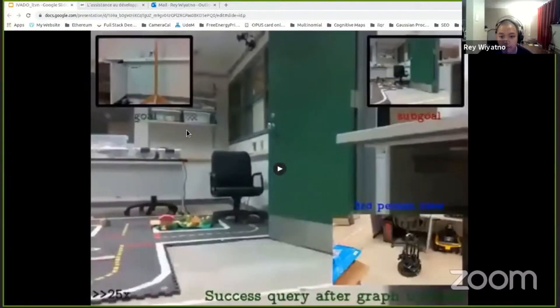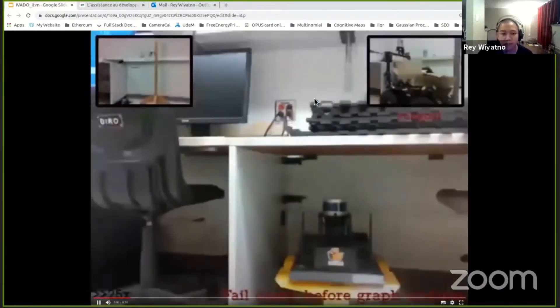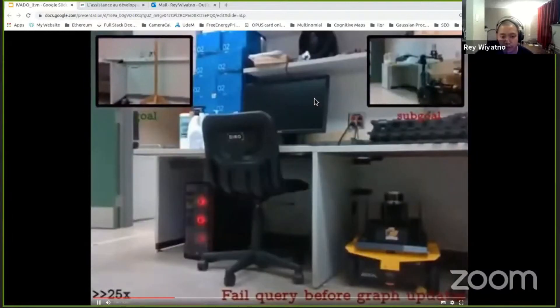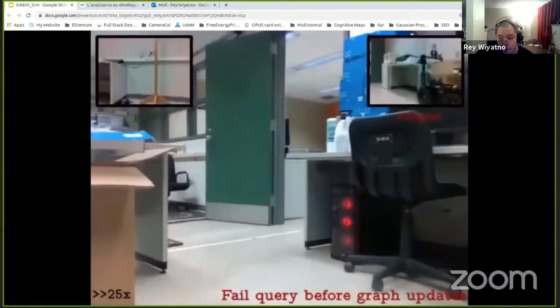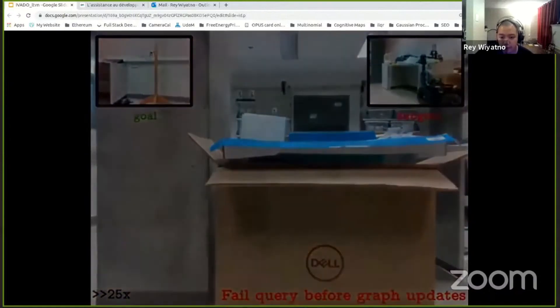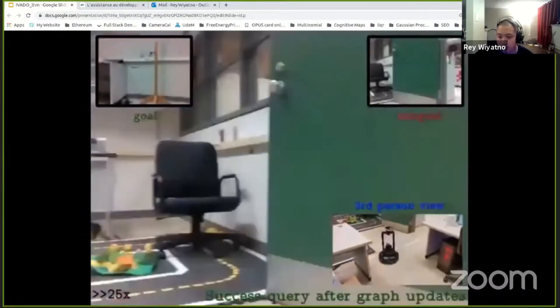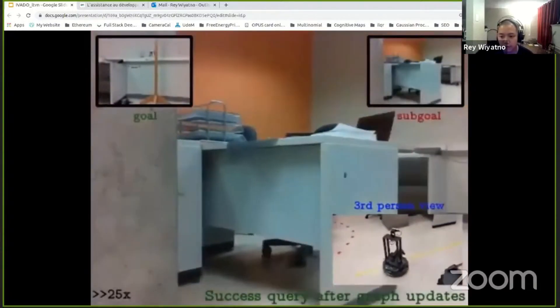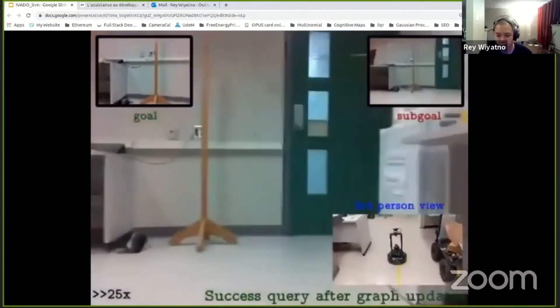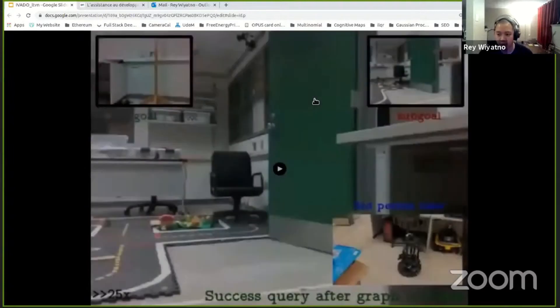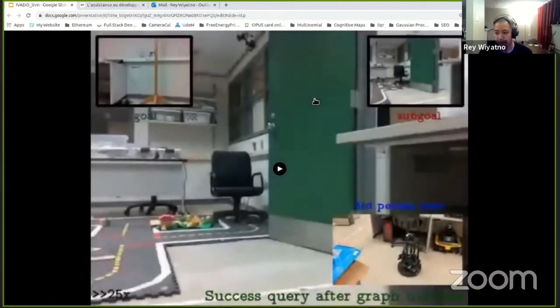But really, we want to emphasize the importance of performing graph updates. Here's an example of an episode where the agent initially failed to reach the target, but after the graph updates, the agent finally was able to reach the target. So which is why we want to emphasize the importance of performing graph updates when building the graph.